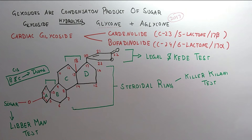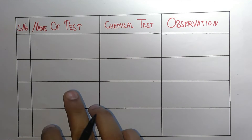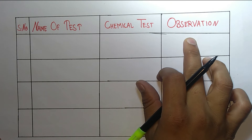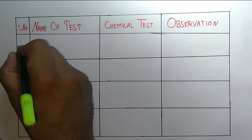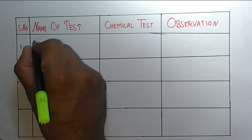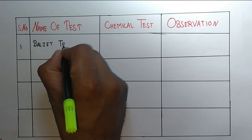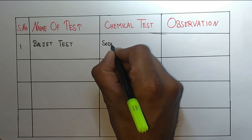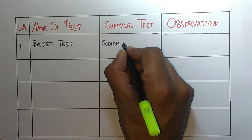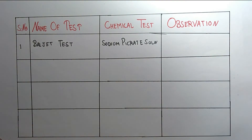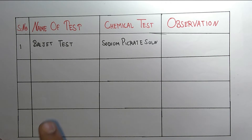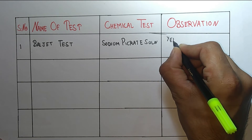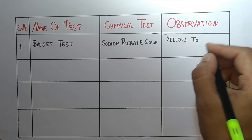Now let's discuss the individual tests — their names, procedures, and observations. The first test is the Baljet test. In the Baljet test, we use sodium picrate solution, and the observation is a color change from yellow to orange.